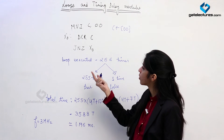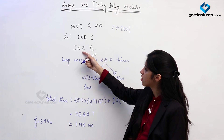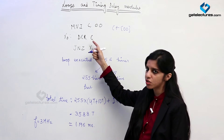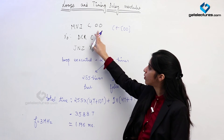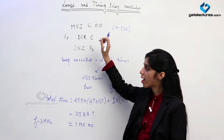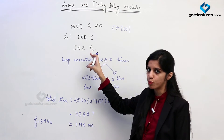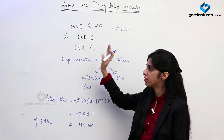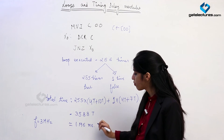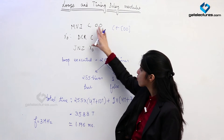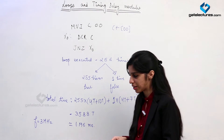One more thing to note: since I loaded C with 00, this instruction takes 256 loops to complete. In case I had loaded this with FF, it would have taken 255 loops total. So finally, this module can provide us a delay of 1.196 milliseconds.